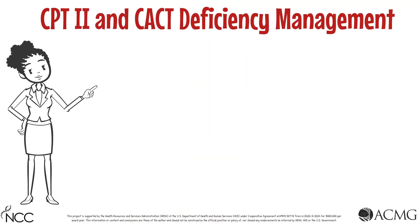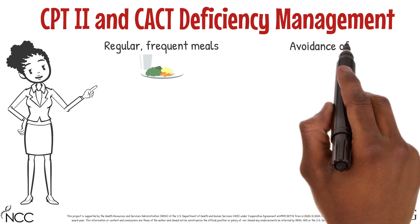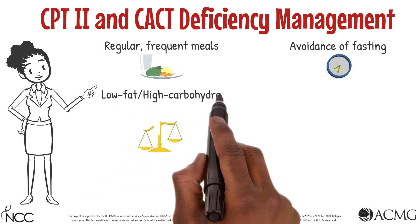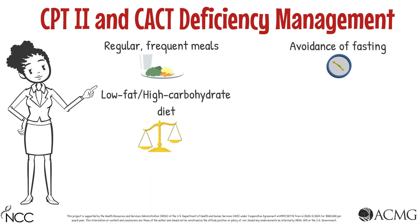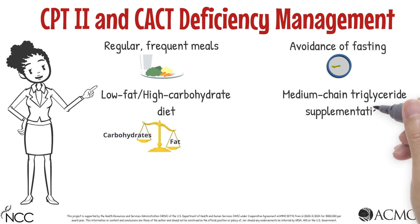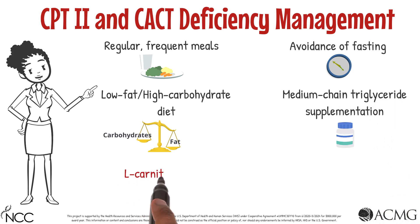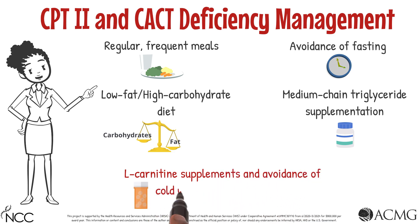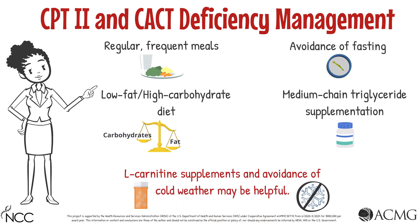Management of CPT2 and CACT deficiency includes regular and frequent meals, avoidance of fasting, a low-fat, high-carbohydrate diet, and medium-chain triglyceride supplementation. In some cases, L-carnitine supplements and avoidance of cold weather can also be helpful.